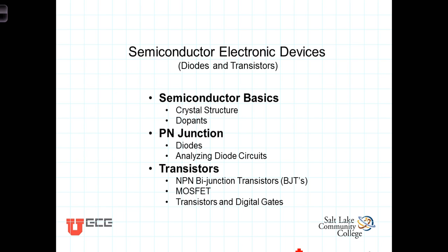We're then going to look at transistors — two different types of transistors: the bipolar junction transistors, or BJTs as they're referred to, and also field effect transistors, or MOSFETs. And then we'll look at how transistors can be used to create the basics of a digital logic circuit.